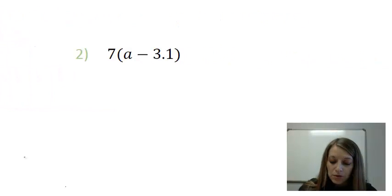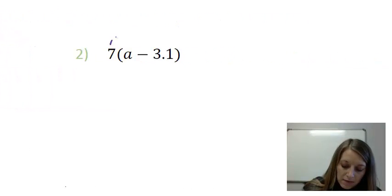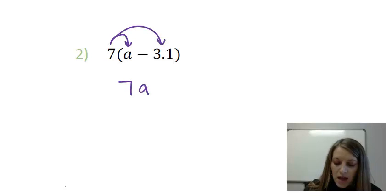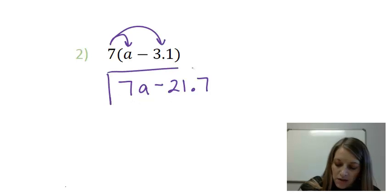In example two, the same type of thing, I have to feed my dog and my cat. So seven times A gives me seven A. And seven times negative 3.1 gives me negative 21.7. So there is my final answer for example two.